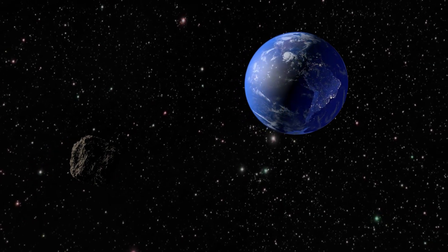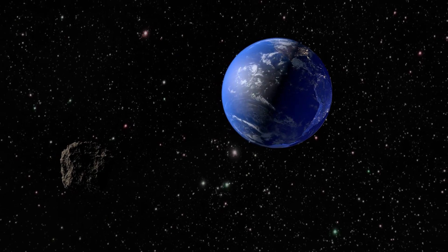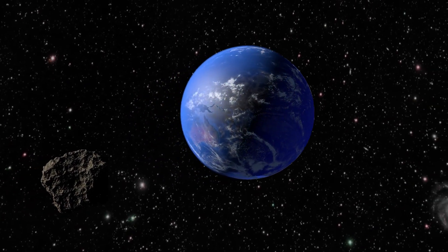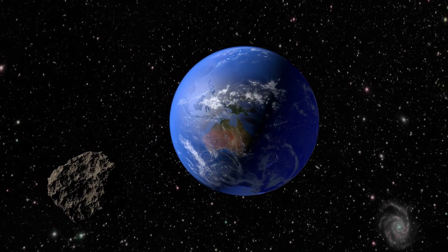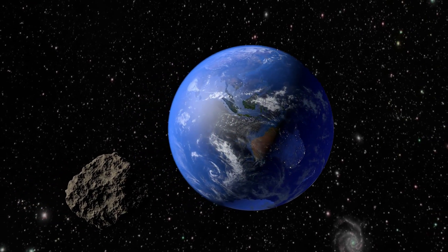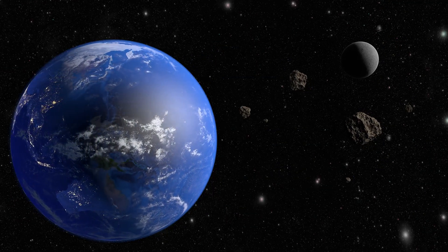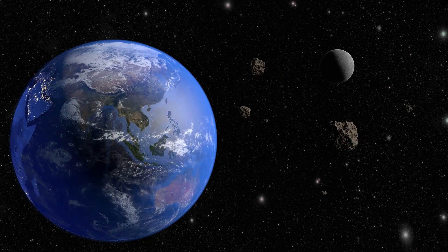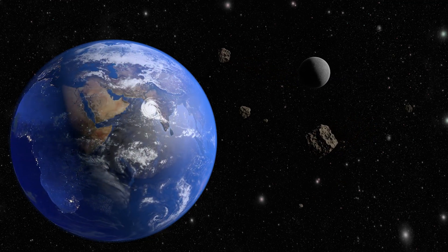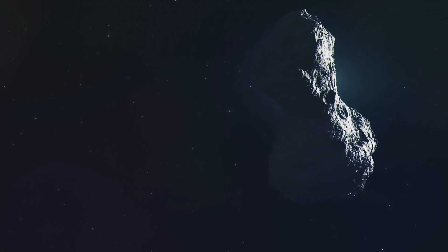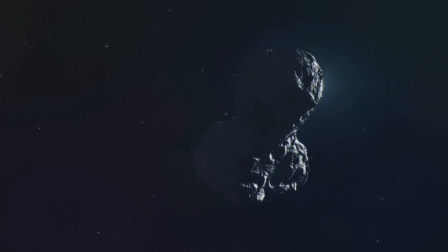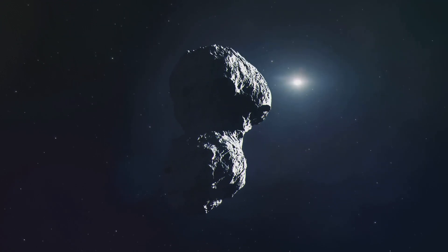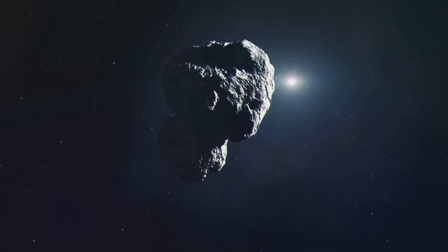2024 PT5 is not a permanent resident of our celestial neighborhood. This asteroid has a unique and temporary relationship with our planet. It began orbiting Earth on September 29th, 2024. This event marked the start of a fascinating period for both scientists and space enthusiasts. During this time, the asteroid will be closely monitored and studied, providing valuable data.